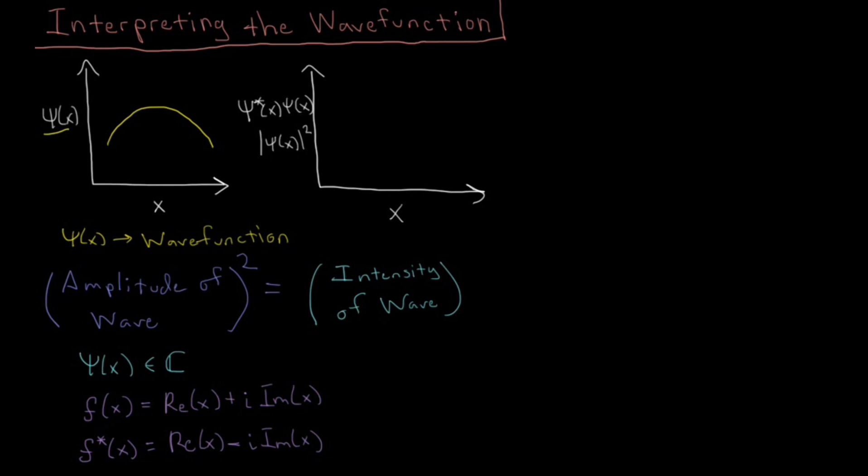So let's pretend we have some psi star psi here, which I'll denote in purple here. And that has some value which varies over space. So we need to have some type of interpretation for what this intensity means. So the German physicist Max Born proposed an interpretation, which we call the Born interpretation.